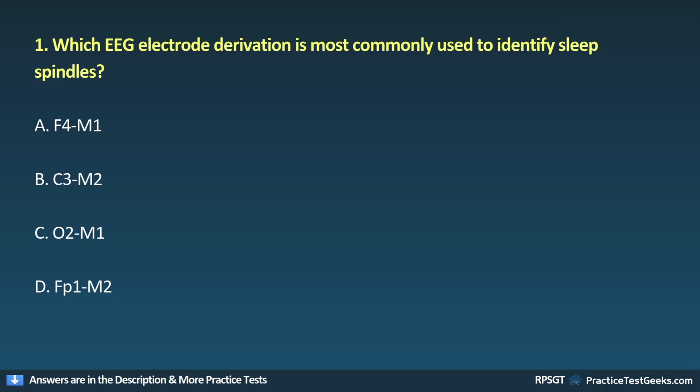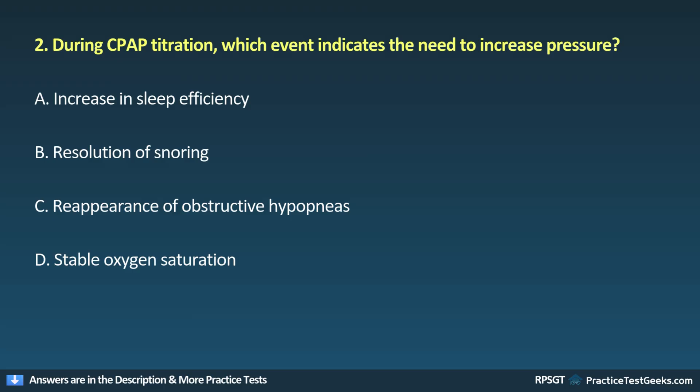Question 1: Which EEG electrode derivation is most commonly used to identify sleep spindles? A. F4-M1, B. C3-M2, C. O2-M1, D. FP1-M2.